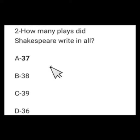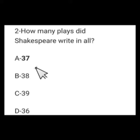Number 2: How many plays did Shakespeare write in all? Options: 37, 38, 39, or 36. The number of plays that Shakespeare wrote is 37. For some people it's 38, but most agree on the number 37. The right option is 37.